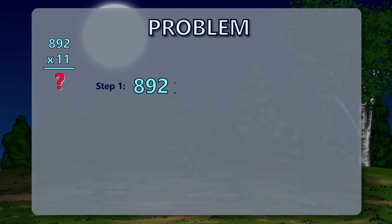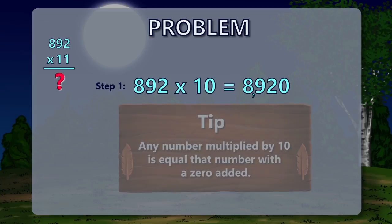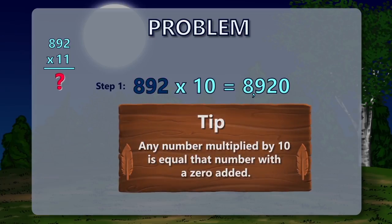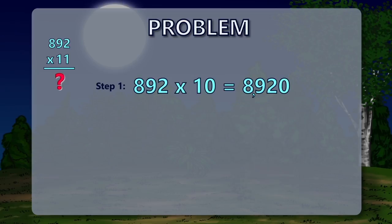892 times 10 equals 8,920, because the product of any number multiplied by 10 is that number with a zero added. 892 times 1 equals 892.